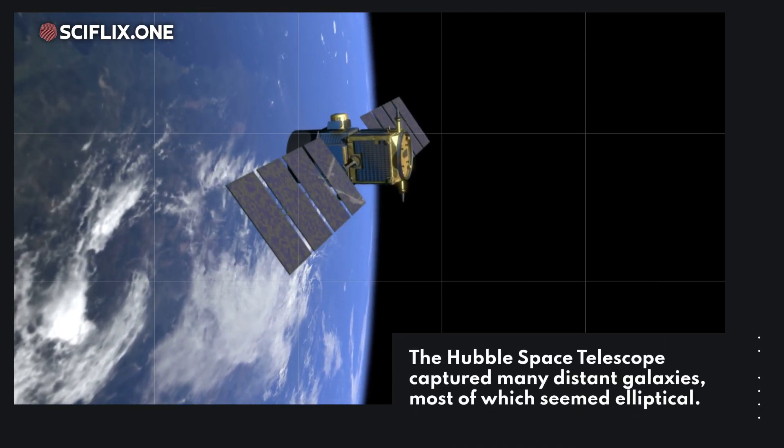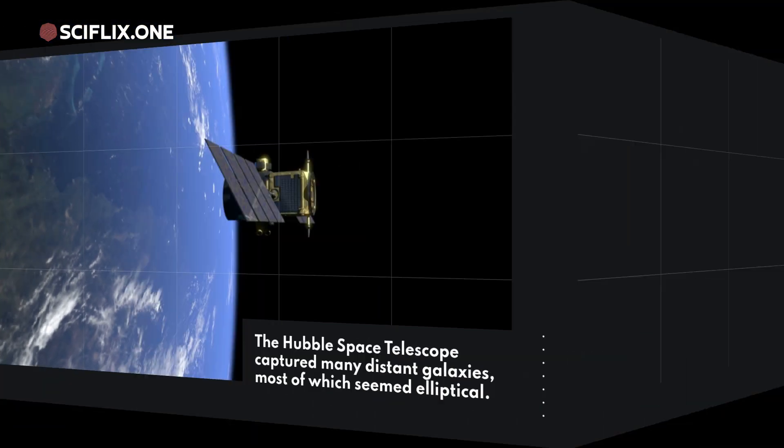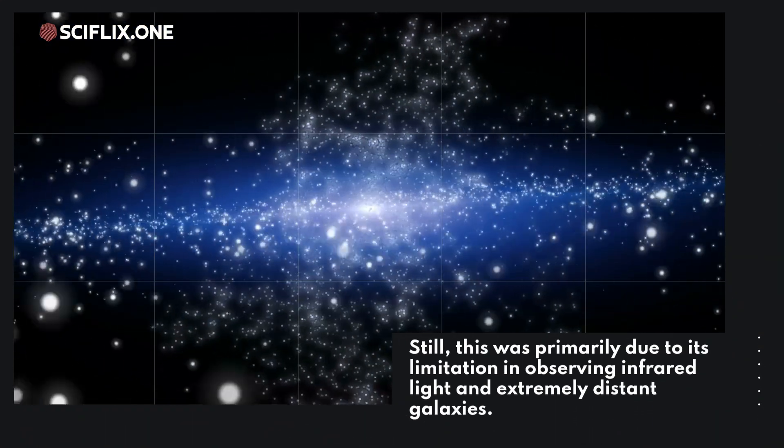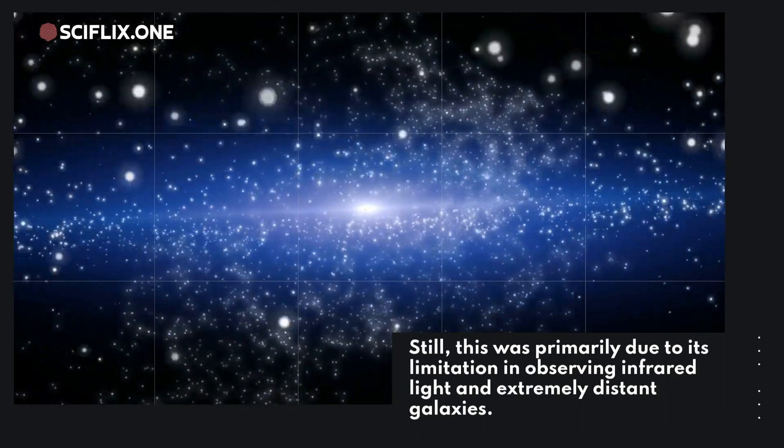The Hubble Space Telescope captured many distant galaxies, most of which seemed elliptical. Still, this was primarily due to its limitation in observing infrared light and extremely distant galaxies.